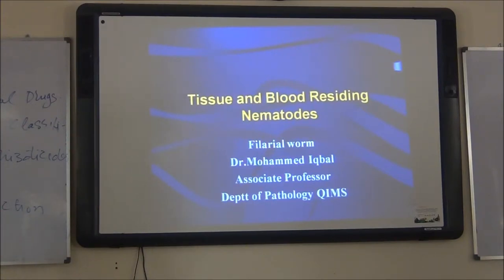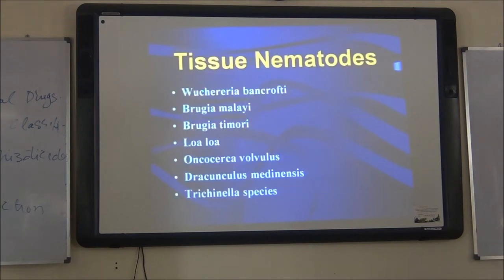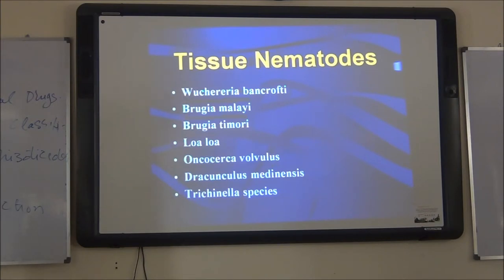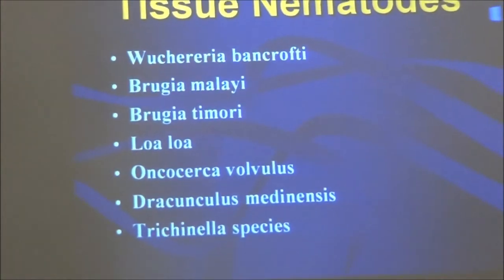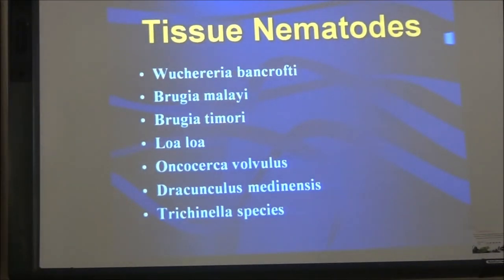We are going to discuss a topic of parasitology: tissue and blood nematodes. As you know that the nematodes belong to the metazoa, and metazoa are of three types: they are either tapeworms or cestodes, flukes or trematodes, and roundworms or nematodes.